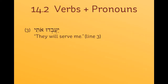Let's look at examples of attached pronouns on verbal forms. In line three, the phrase 'they will serve me' could have been written as ya'avdu oti — the yiqtol form plus the object pronoun oti. But in the story it's written with the attached pronoun directly on the verb: ya'avdu-ni, 'they will serve me.' One change you may not expect is the shuruq is written as a qibbuts — pronounced the same. This is a good reason to always read your Hebrew out loud, especially at the beginning; train your ears, not just your eyes.